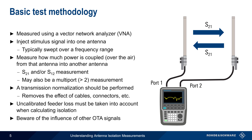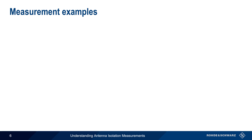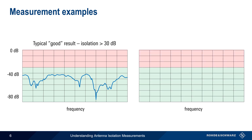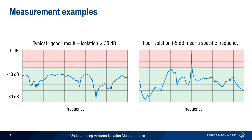Finally, be aware that other over-the-air signals can influence the measurement results. Ideally, measurements should be made when no signals other than the VNA stimulus signal are present. A typical good result is isolation of 30 to 40 dB over the frequency range of interest. A common issue is having good isolation over much of the frequency range but poor isolation near one or more specific frequencies. In this example, we see isolation of only about 5 dB over a small section of the total frequency range. Note too that although isolation tends to be similar regardless of measurement direction — that is, S21 or S12 — it's often a good idea to verify this as well.